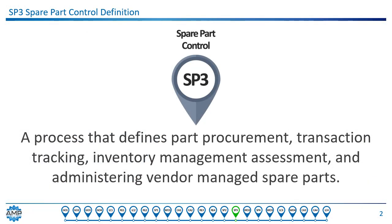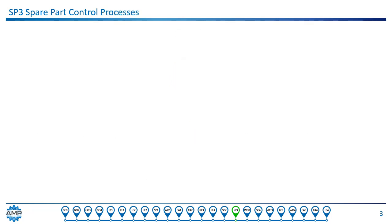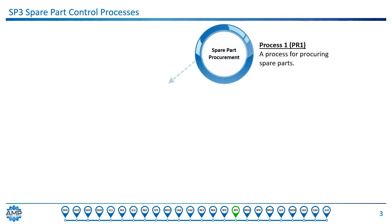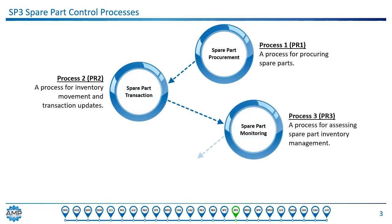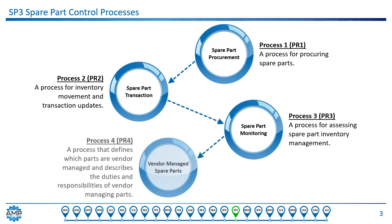Spare Part Control is defined as a process for part procurement, transaction tracking, inventory management assessment, and administering vendor-managed spare parts. The four processes for Spare Part Control address how we get spare parts, how we manage spare part movement through the spare part management system, how we administer spare parts management, and finally how to determine which spare parts are best managed by vendors.